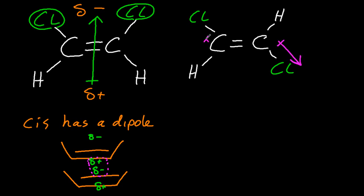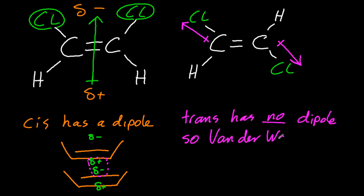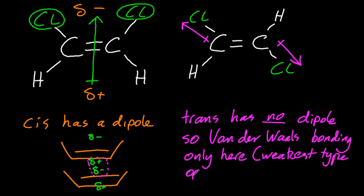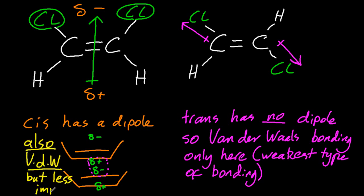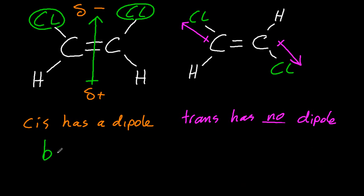The trans, those two chlorine dipoles cancel out, so the trans has no dipole. So that just leaves us with van der Waals bonding. Van der Waals bonding is the weakest of the bonding, so the trans isn't going to stick very well to each other. The other one also has van der Waals, but the dipole-dipole is much stronger.